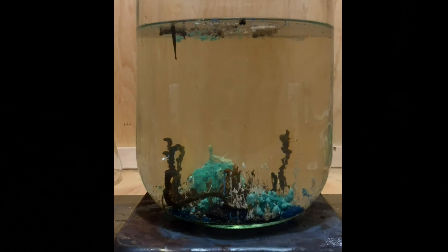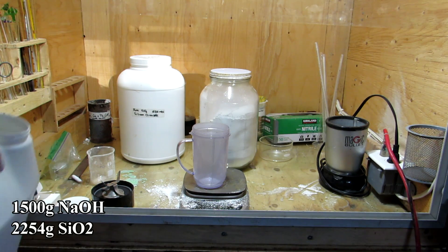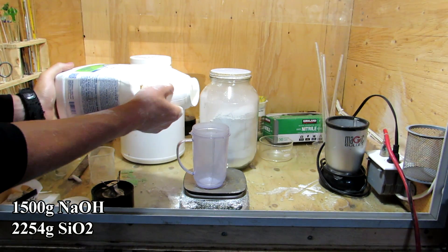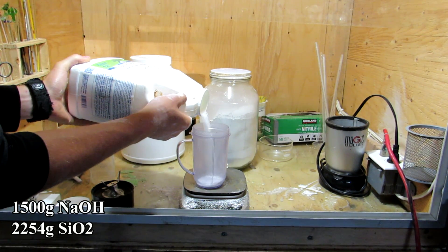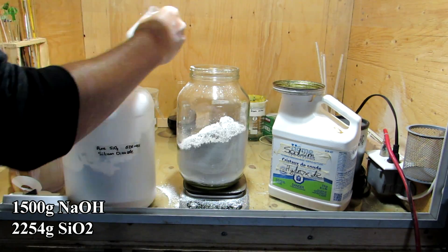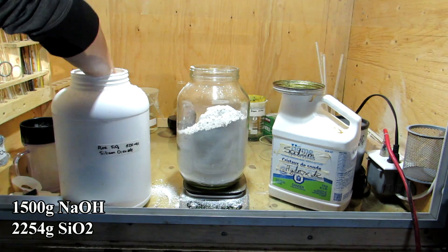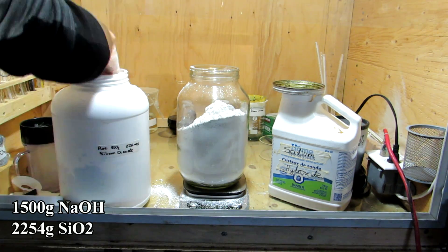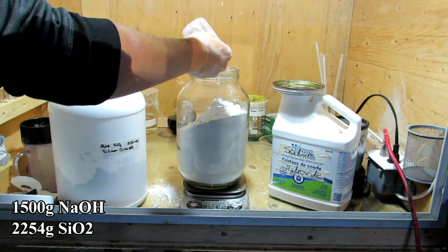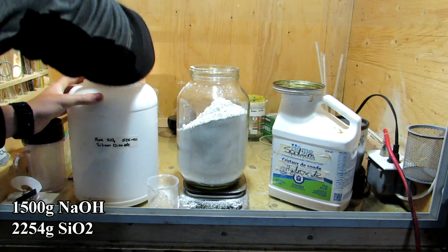To begin, we can weigh out 1500 grams of sodium hydroxide and 2254 grams of silicon dioxide. The sodium hydroxide can be purchased as lye or drain cleaner from hardware stores, and the silicon dioxide can be found from pottery supply stores. Alternatively, the pure silicon dioxide we prepared in a previous video could also be used if higher quality sodium silicate is desired. Beach sand could also be used if the final purity of the sodium silicate is not important.